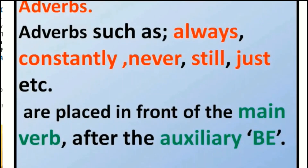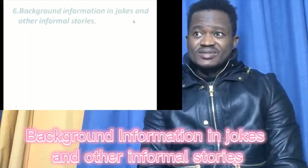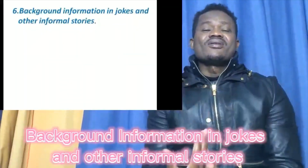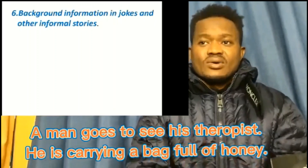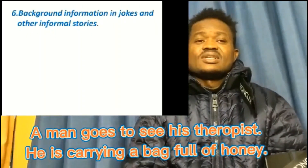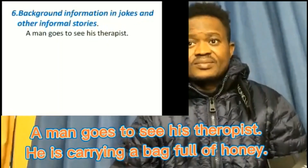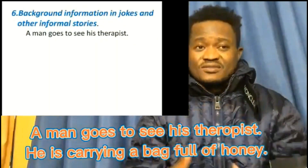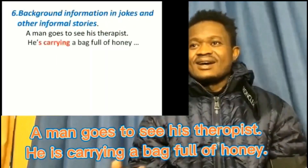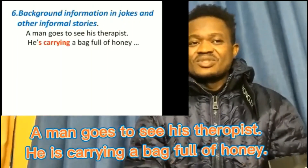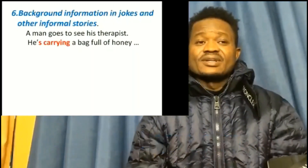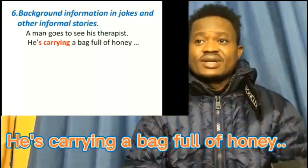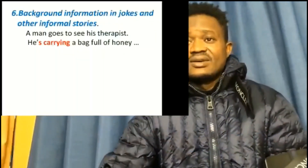We use the present progressive for background information in jokes and informal stories. Example: 'A man goes to see his therapist. He is carrying a bag full of honey.' The present progressive 'is carrying' sets the background scene in that joke.